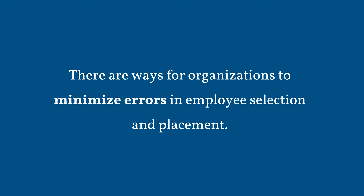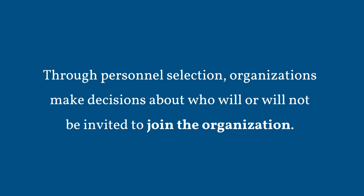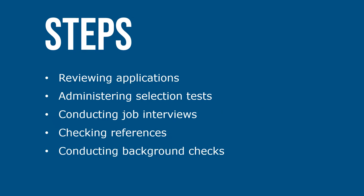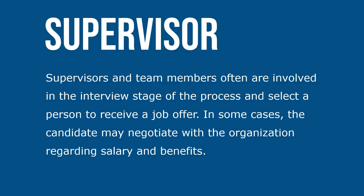There are many ways for organizations to minimize errors in employee selection and placement. Through personnel selection, organizations make decisions about who will or will not be invited to join the organization. Selection begins with candidates identified through recruitment, with attempts to reduce the number of individuals to those best qualified to perform the available jobs. Steps include reviewing applications, administering selection tests, conducting job interviews, checking references, and conducting background checks. Supervisors and team members often are involved in the interview stage and select a person to receive a job offer.